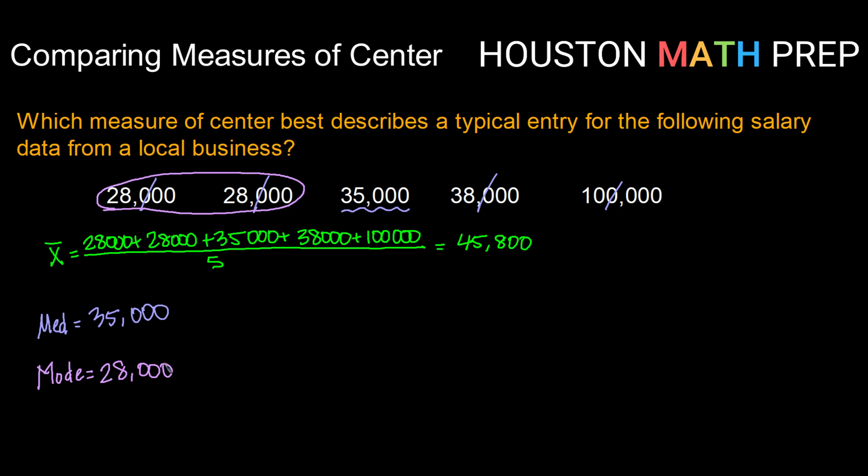Okay, now we've got all three of our measures of center. Now the question becomes, which of them describes our data best? So if we take a holistic look, does it appear that the mean of $45,800 describes a typical salary for people working at this company? To me, it doesn't really, because $45,800 would fall right here.